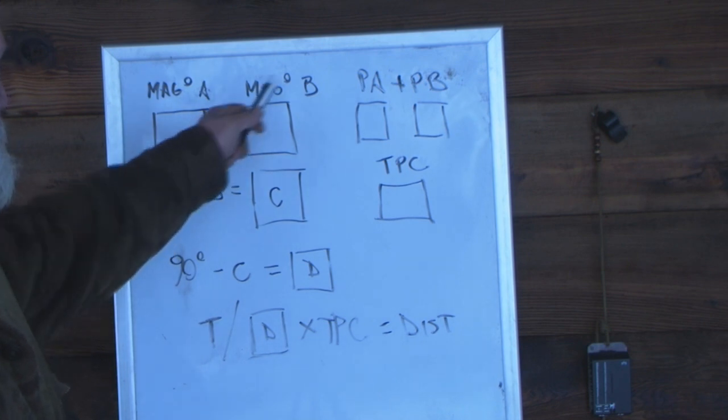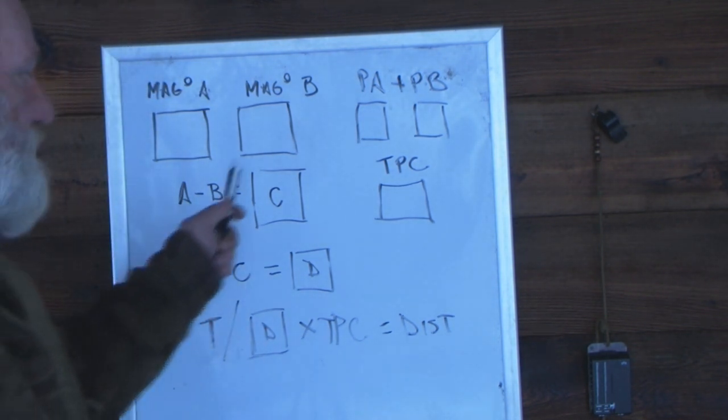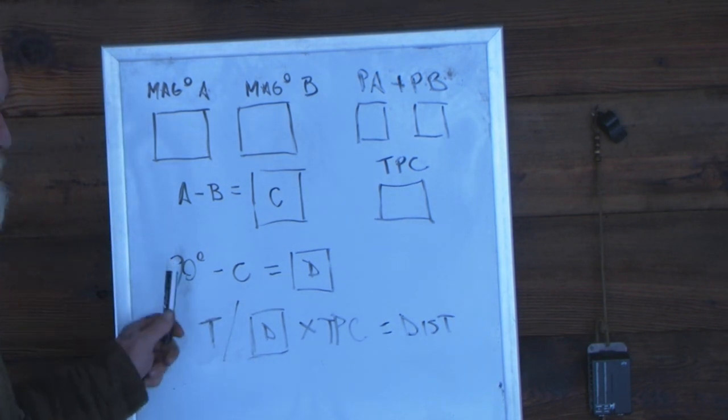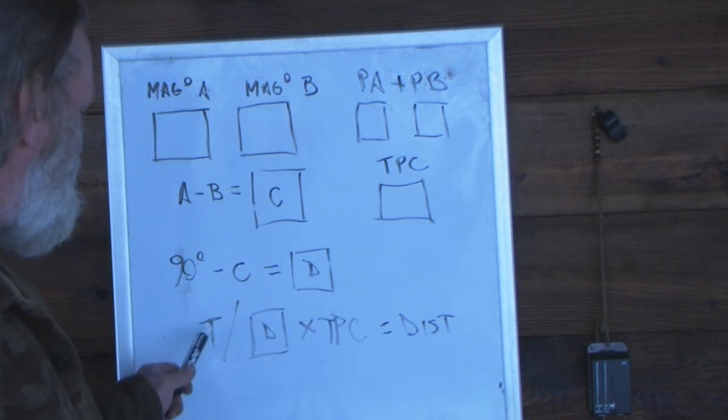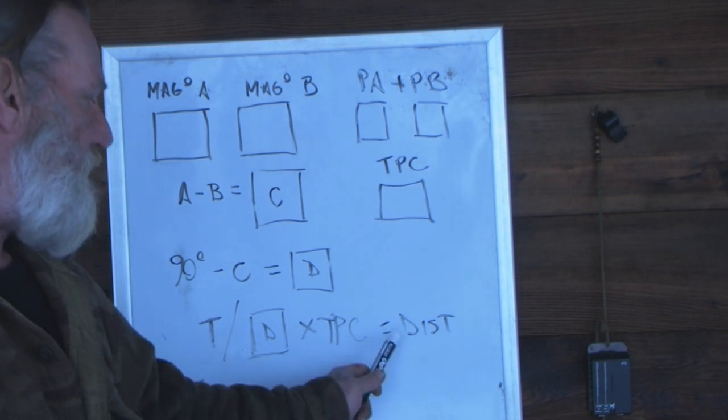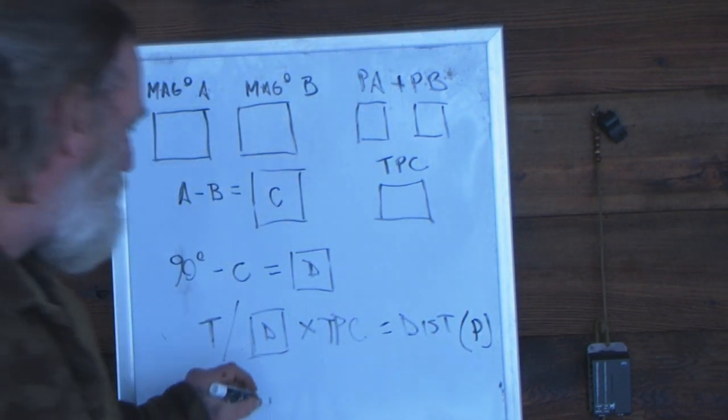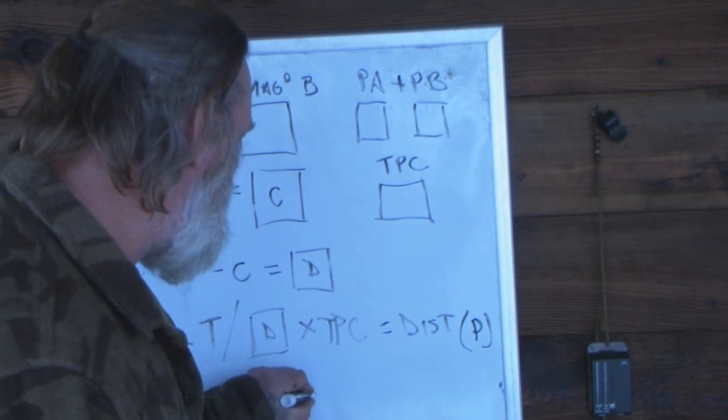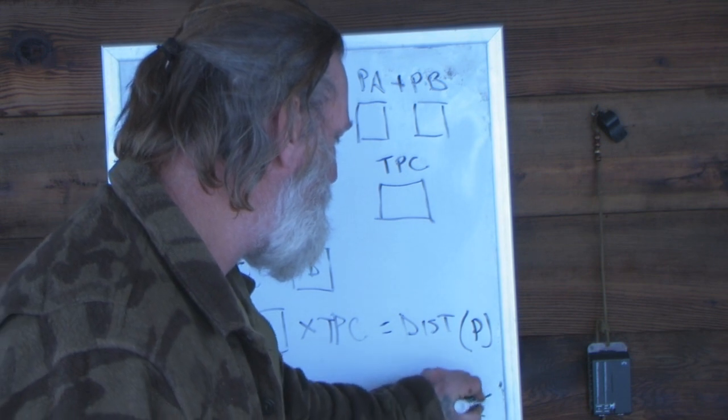Then we're going to take A subtract it from B, is going to give us C, which is the difference between those two angles. Ninety degrees, remember that's what we're looking for. We're going to take 90 degrees, subtract C from it, and that's going to give us a number which is going to equal D. We're going to take the tangent of D off of our tan table, and we're going to times that by our total pace count, and that's going to equal our distance in paces. Then if we take our paces divided by our pace count, that's going to equal our distance in meters.